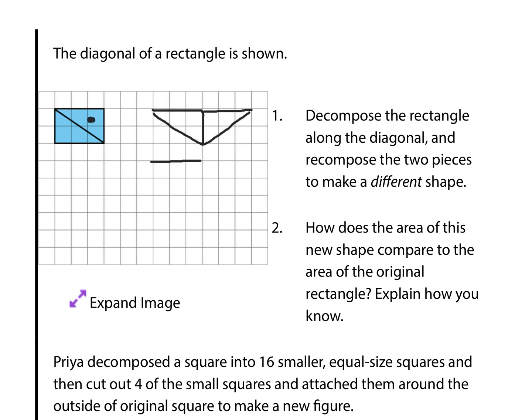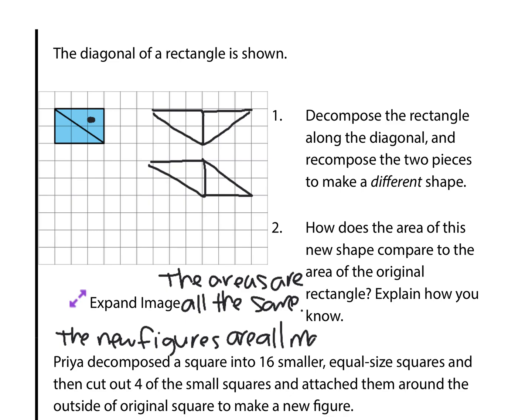Or, if we start again with our 3 across and 2 down, we could just use the 2 down and come 3 across this way and draw in like a parallelogram. There are a lot of different options, but when we look at how does the area of this new shape compare to the area of the original rectangle, the areas are the same. The areas are all the same. And the reason why? The new figures are all made of copies of the original rectangle.